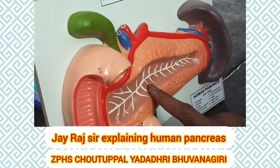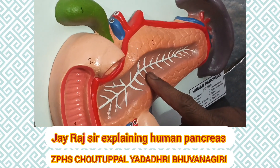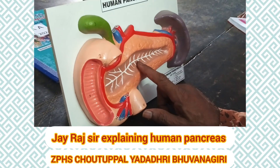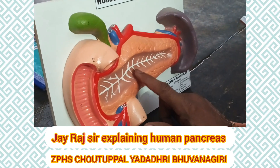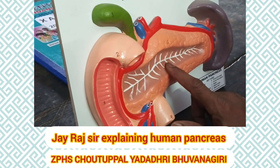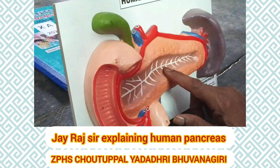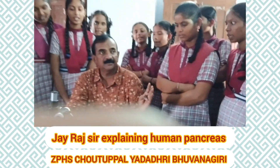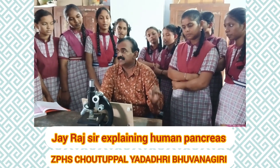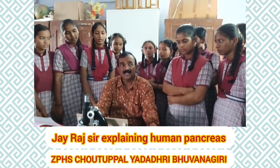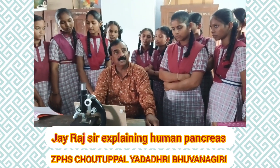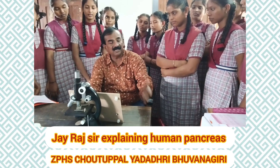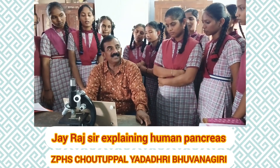The pancreas secretes three enzymes. First, amylase — it is useful to convert carbohydrates into maltose sugar. Second, trypsin — it converts proteins into peptones. Third, lipase — it converts fats into fatty acids and glycerol. These are the three enzymes secreted by the pancreas.